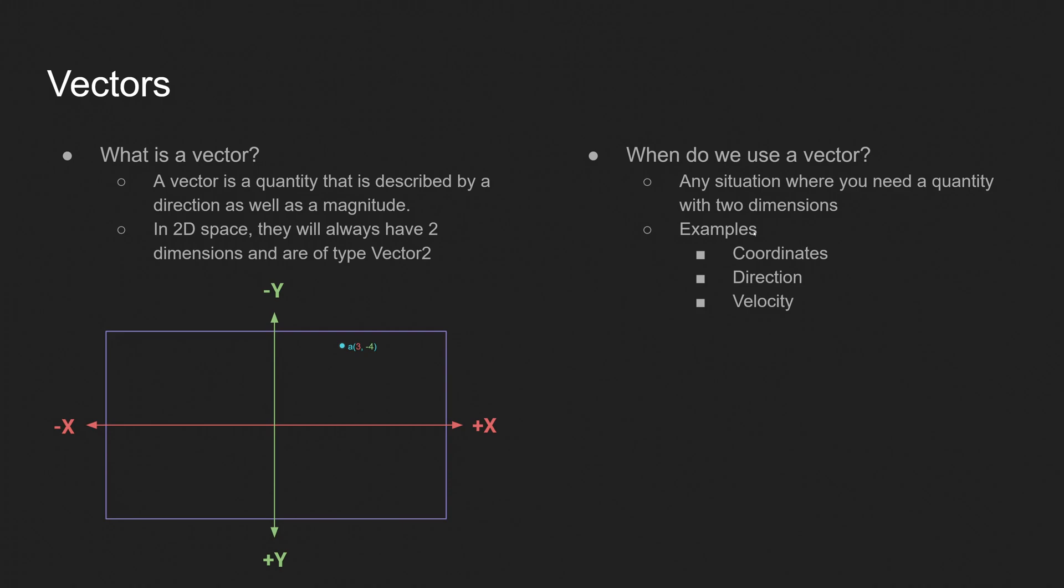So when would we use a vector? Any situation where you need a quantity with two dimensions, like coordinates, directions, velocities, anything of that nature, you're going to be using a vector.